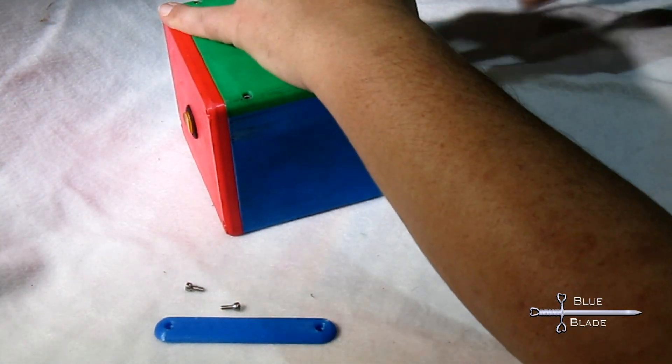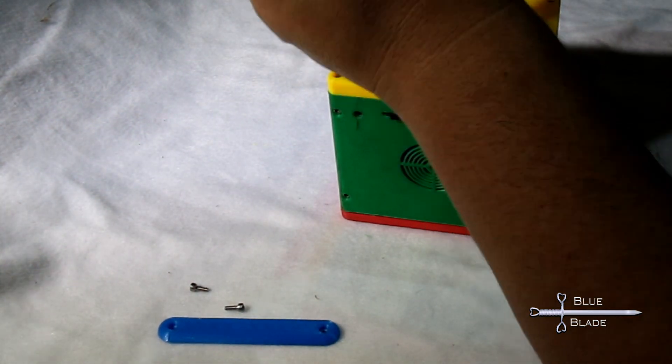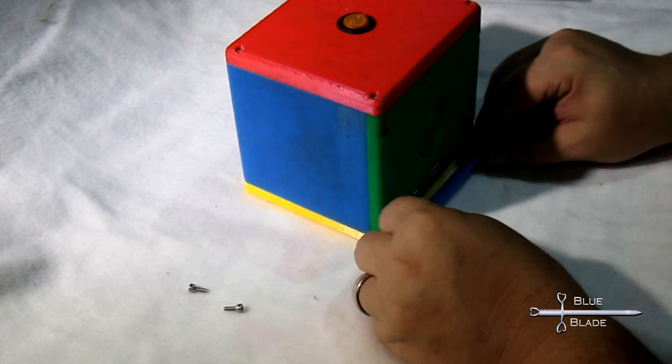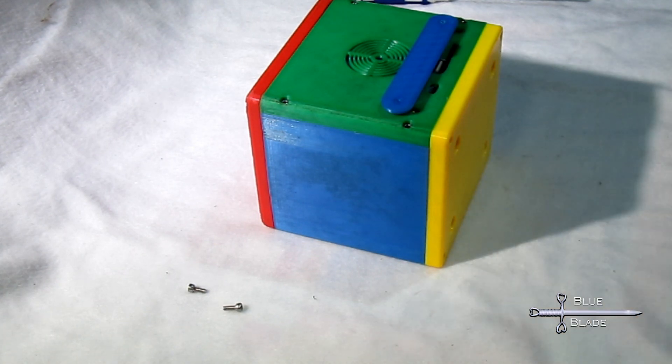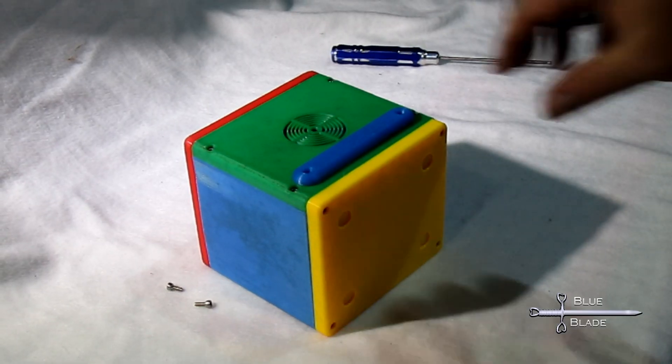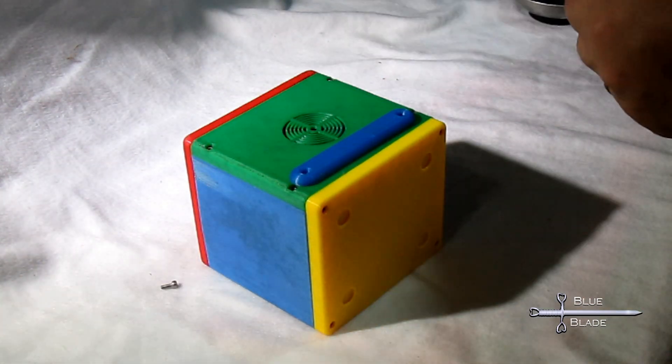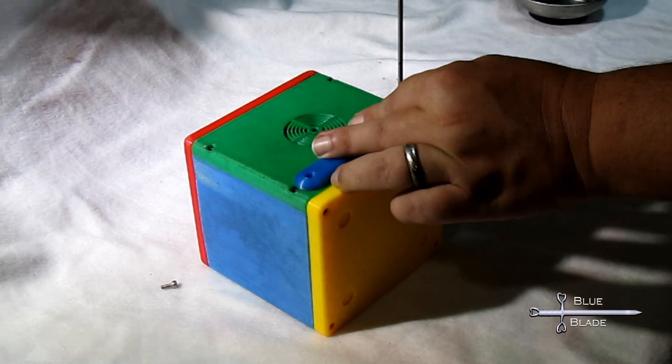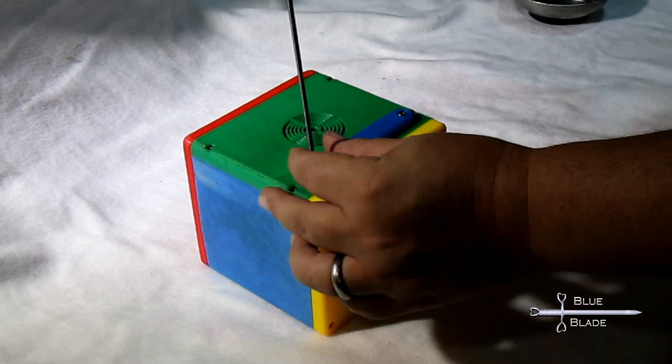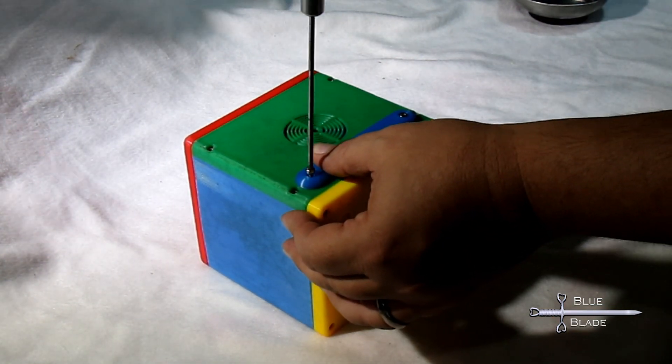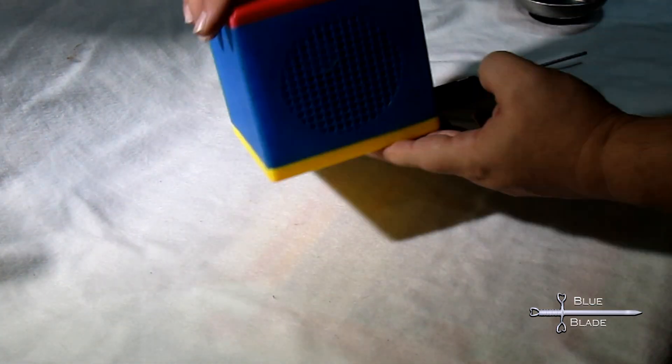If you choose to skip the thread inserts, print the no inserts version of the back panel. Line up the cover with the SD card and the USB port and secure it in place with the remaining short 3 millimeter bolts. Now we're all done. Test and enjoy.